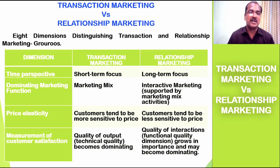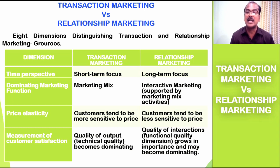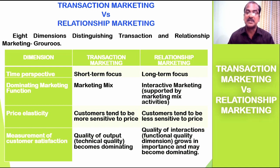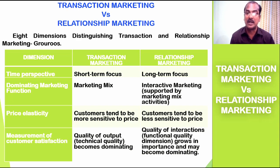The fourth dimension is measurement of customer satisfaction. With regard to transaction marketing, quality of output — that is, the technical quality of the output — becomes dominating. Whereas in relationship marketing, customer satisfaction is measured based on quality of interactions — not just the product the customer buys, but the interactions between the two parties: how customers are received, how they are enlightened about products and services, and how they are facilitated in the purchase place to choose the most appropriate solution for their problem.